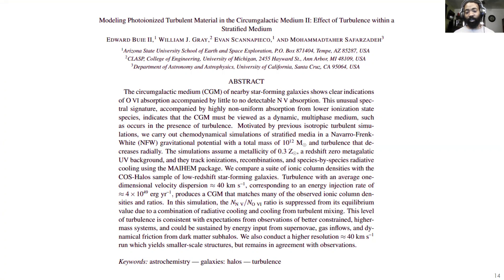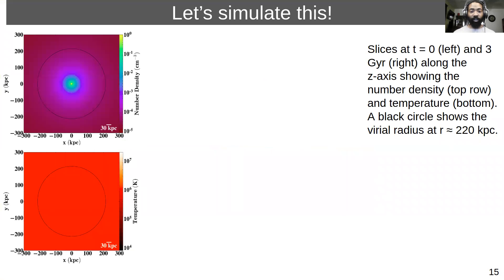These simulations assumed a 30% solar metallicity and a UV background, and also in the context of non-equilibrium chemistry that may develop in this situation. So we started with a NFW density gradients and a cube of 800 kiloparsecs on each side, as well as initialize the virial temperature of the halo.